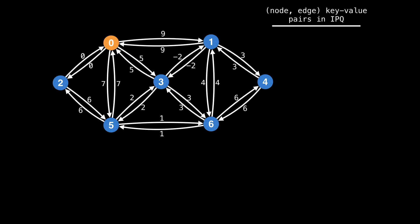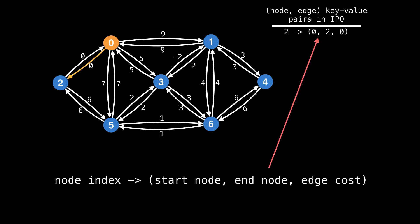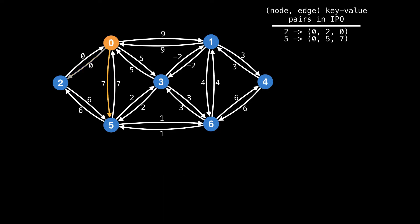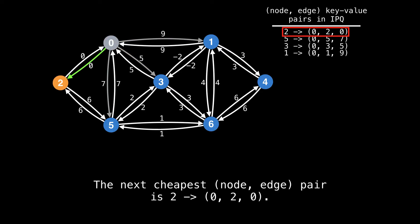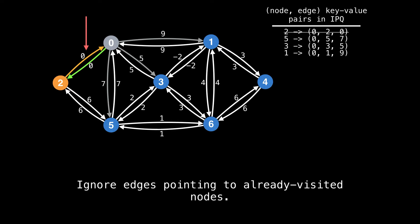Start by iterating over all the edges of zero and relax them. During the relaxing process, add a node-edge pair to the index priority queue if it does not exist yet; otherwise, update the value if the new edge has a better cost than what already exists. The first node-edge pair we add is node two with the incoming edge from zero to two with a cost of zero, and similarly for the rest of zero's edges. The next best node-edge pair based on minimum edge cost is node two with the incoming edge from node zero. Now iterate through all the edges of node two and relax all edges, ignoring edges pointing to already visited nodes.